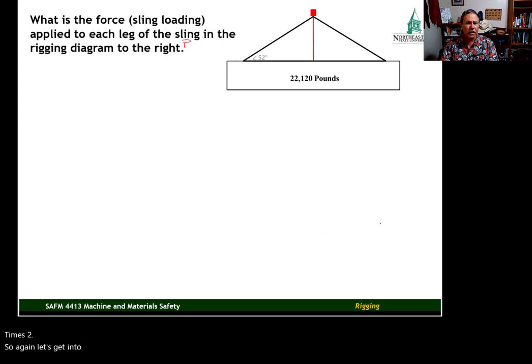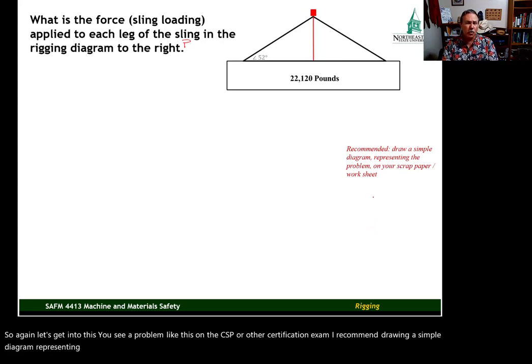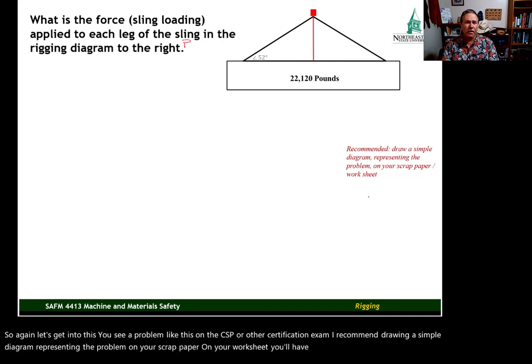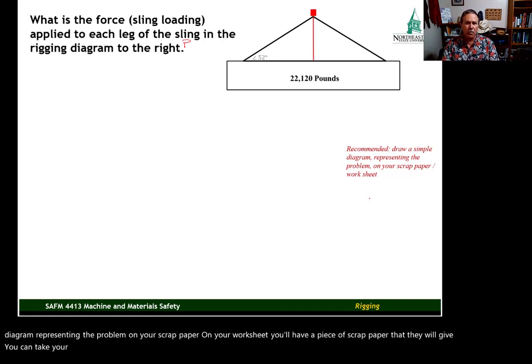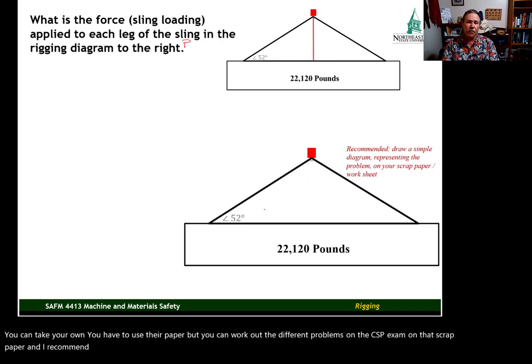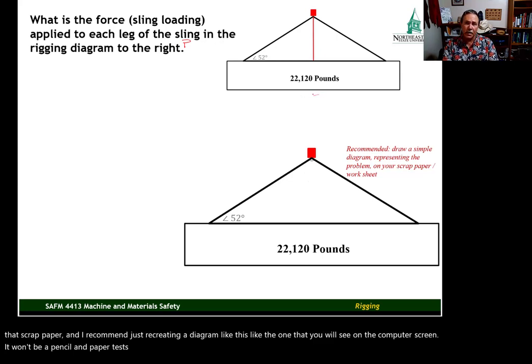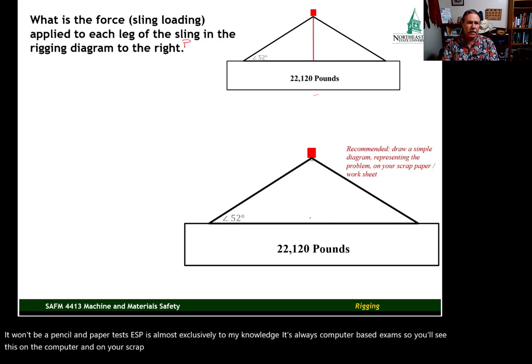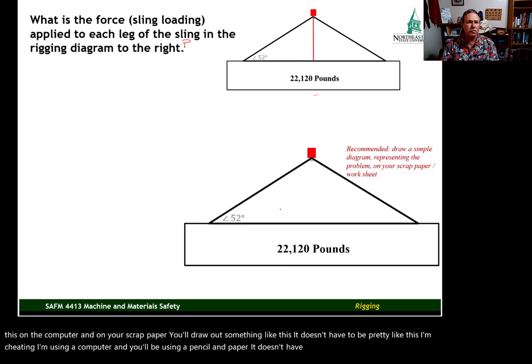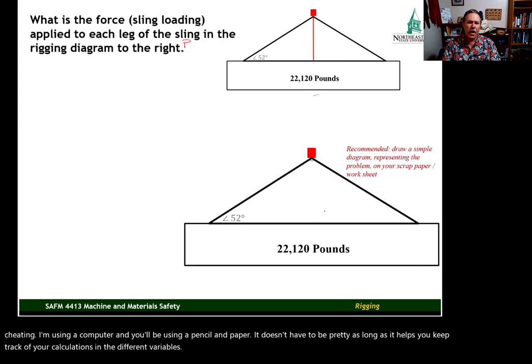So again, let's get into this. You see a problem like this on the CSP or other certification exam, I recommend drawing a simple diagram representing the problem on your scrap paper, on your worksheet. You'll have a piece of scrap paper that they will give you. You can't take your own. You have to use their paper. But you can work out the different problems on the CSP exam on that scrap paper. And I recommend just recreating a diagram like this, like the one that you will see on the computer screen. It won't be a pencil and paper test. CSP is almost exclusively, to my knowledge, it's always a computer based exam. So you'll see this on the computer. And on your scrap paper, you'll draw out something like this. It doesn't have to be pretty like this. I'm cheating, I'm using a computer. And you'll be using a pencil and paper. It doesn't have to be pretty as long as it helps you keep track of your calculations and the different variables.